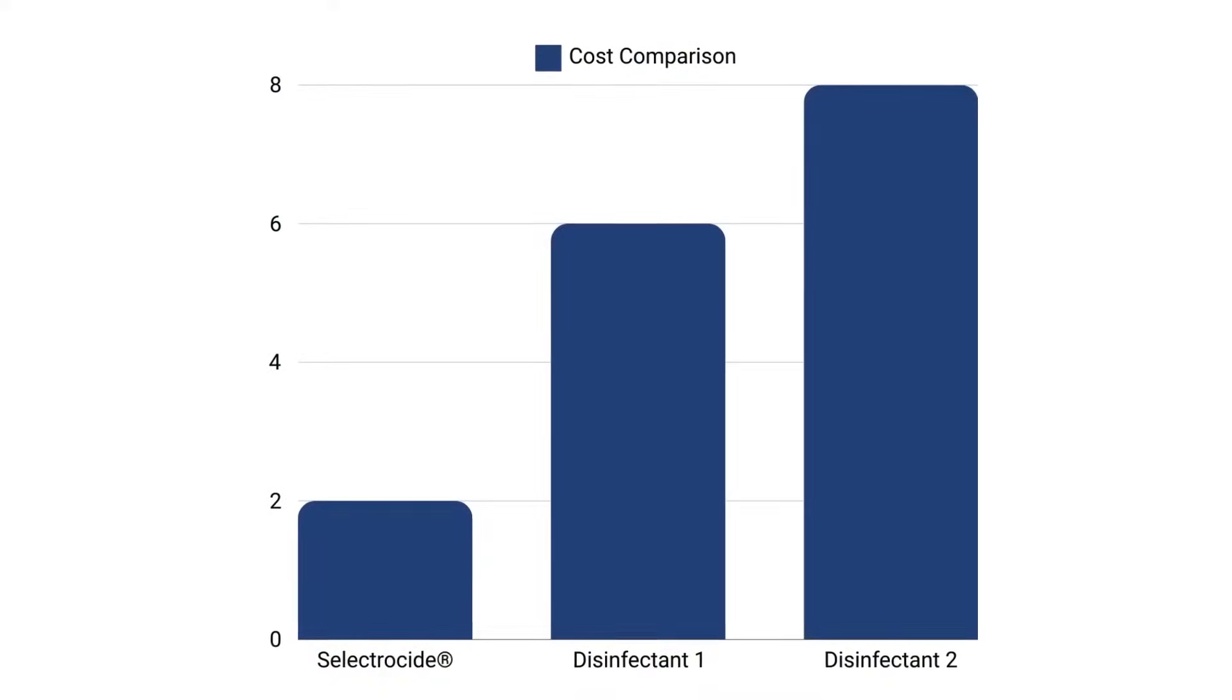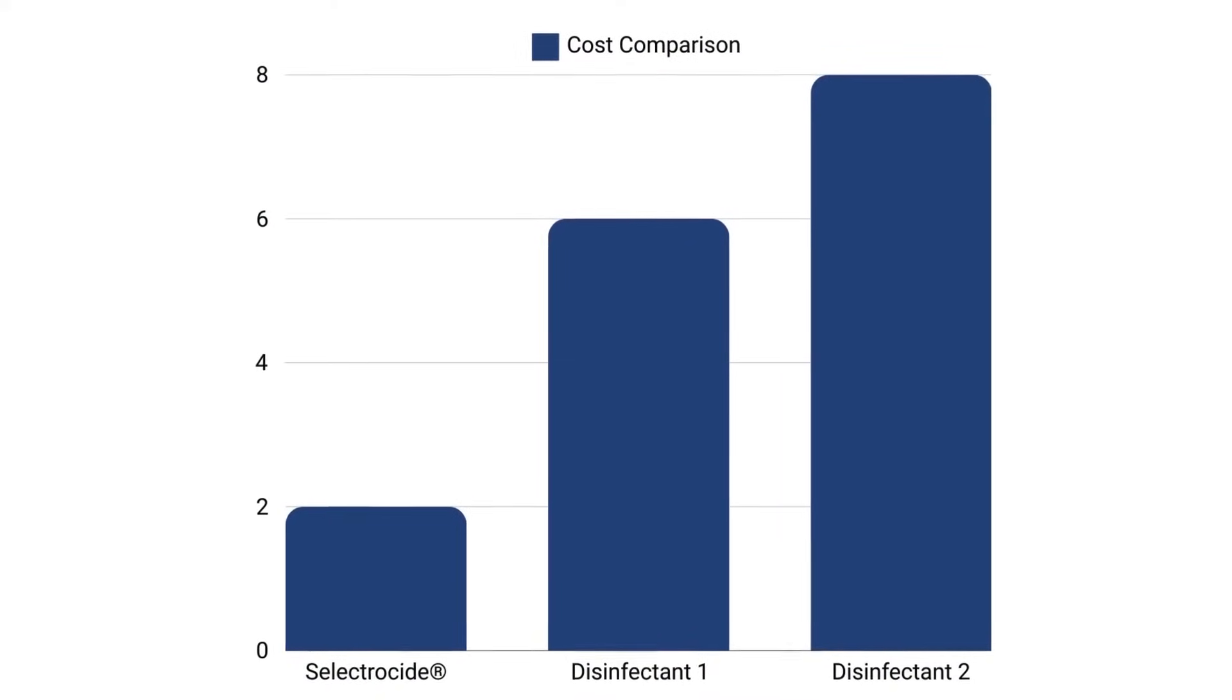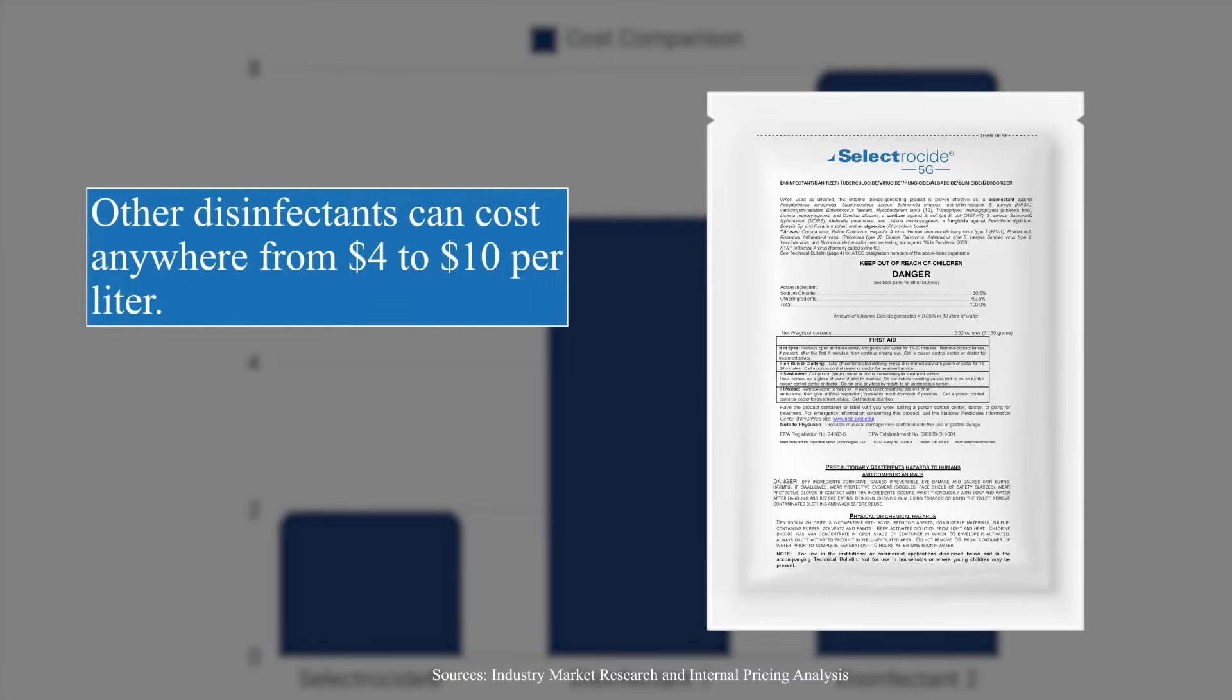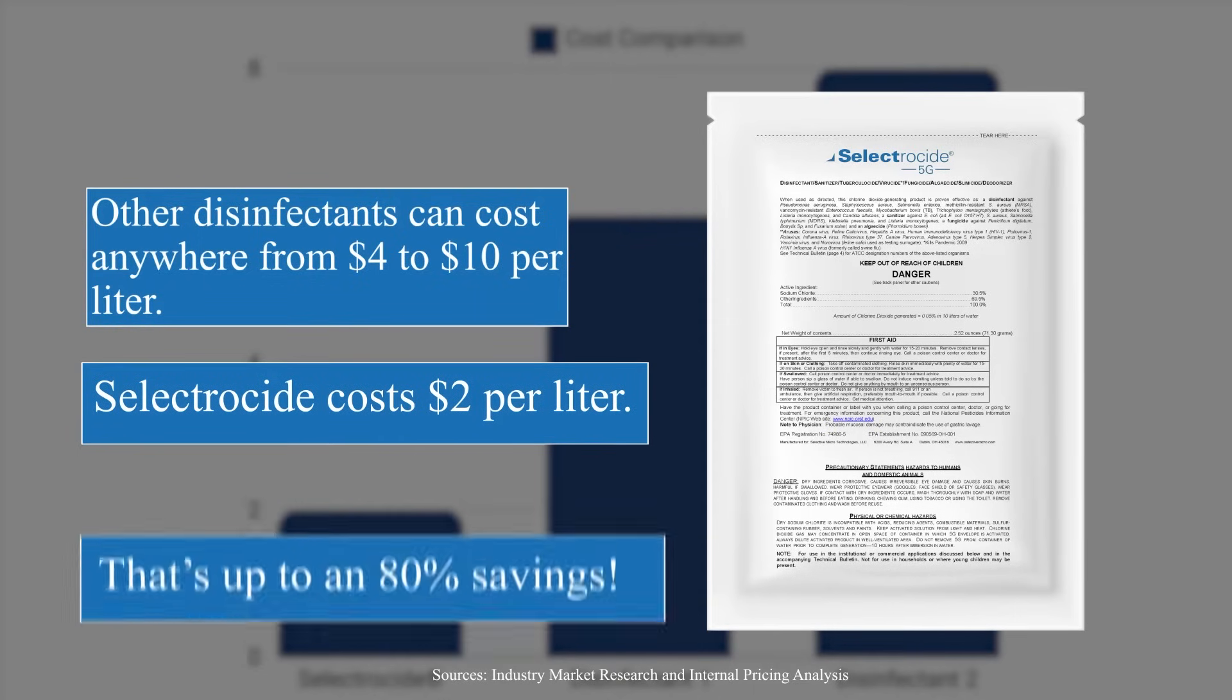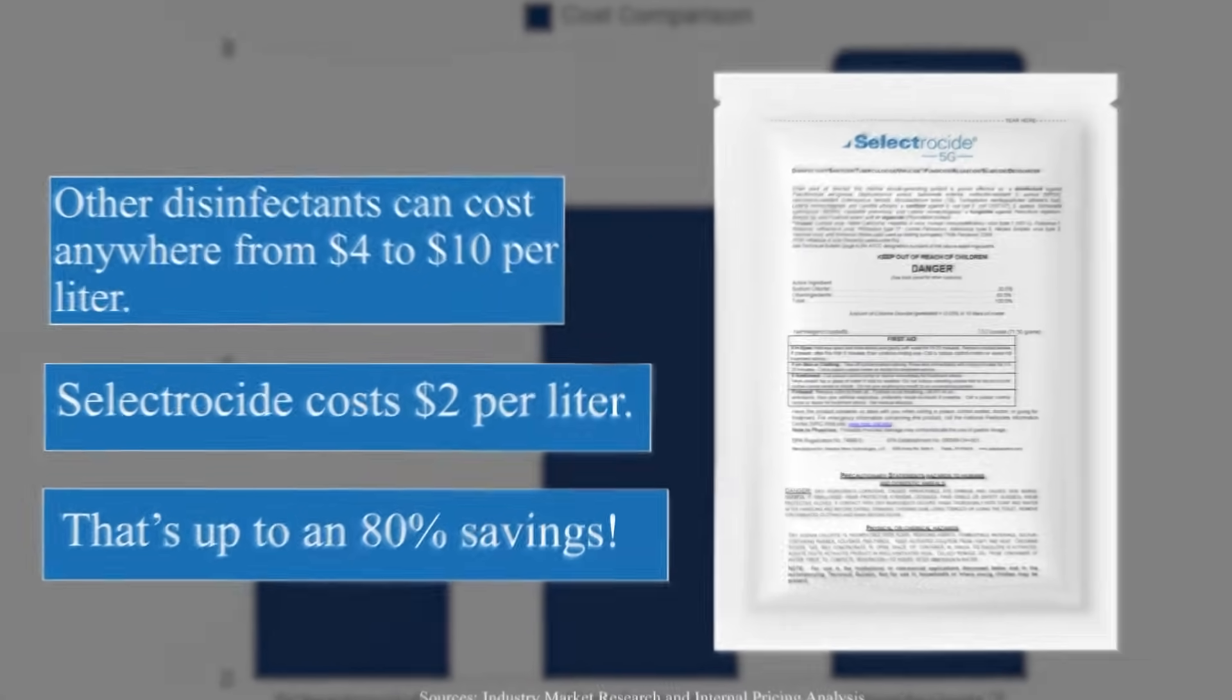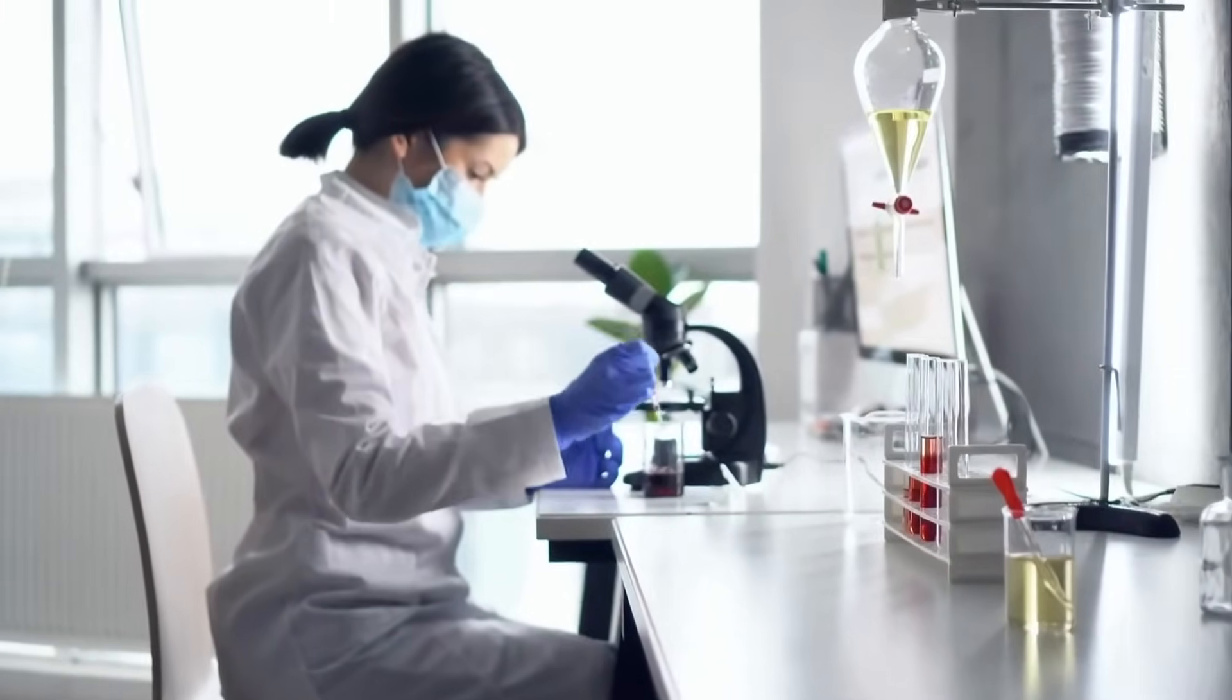Cost is crucial and here's where Selectricide shines. While other disinfectants can cost anywhere from four to ten dollars per liter, Selectricide is available at just two dollars per liter. That's up to an 80% savings which really adds up over time. And while cost savings are significant, let's talk effectiveness.